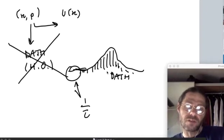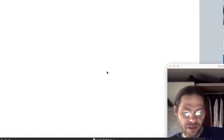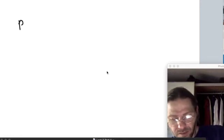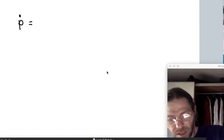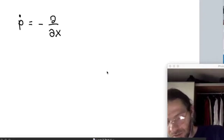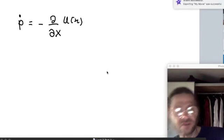The resulting equation of motion for the system can be phrased in the following very convenient way: p dot equals negative partial derivative of u with respect to x.